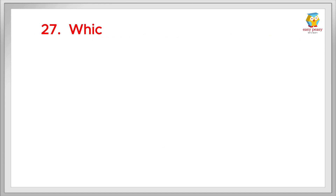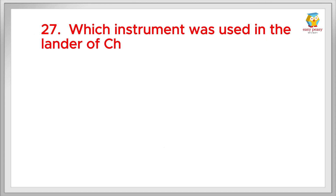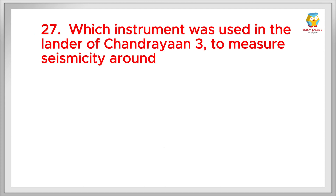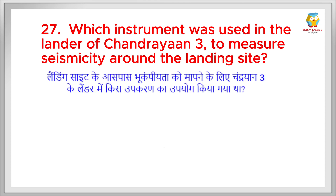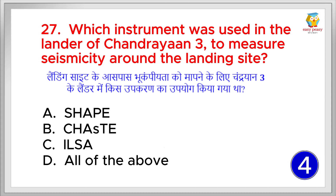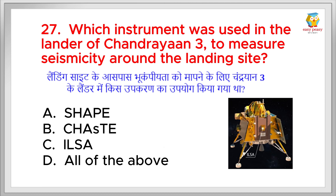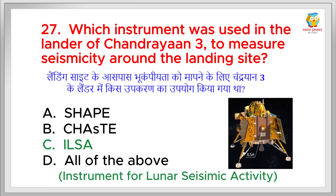Which instrument was used in the lander of Chandrayaan 3 to measure seismicity around the landing site? Landing site ke aas paas bhukaamp mapne ke liye Chandrayaan 3 ke lander mein kis upkaran ka prayog kiya gaya tha? The correct answer is ILSA. Full form of ILSA is Instrument for Lunar Seismic Activity.